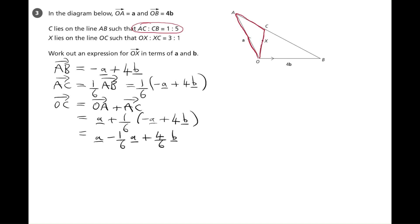If we now look at the a's, we've got one whole a, subtract one sixth, so that will give us five over six lots of a. And then we've got the four over six, which cancels to two thirds of b.